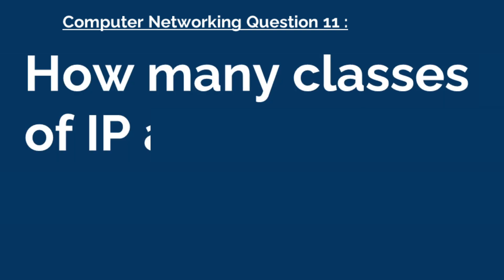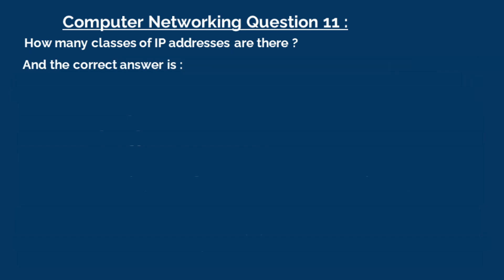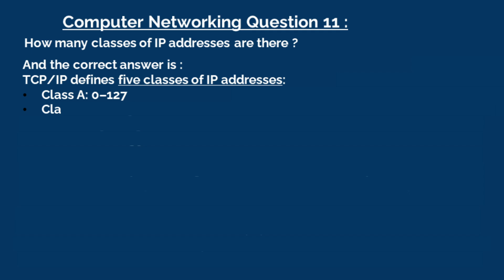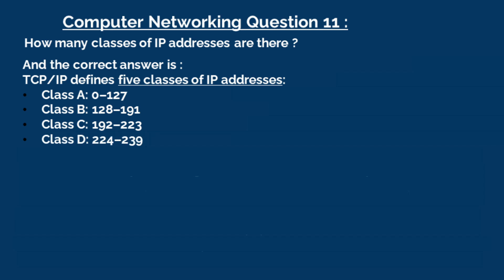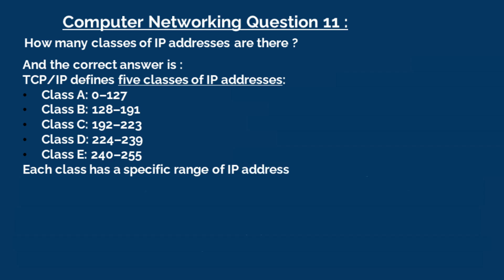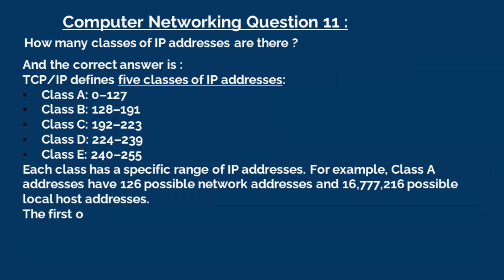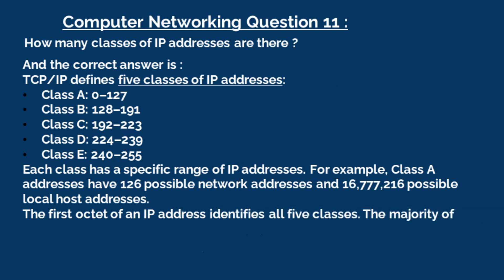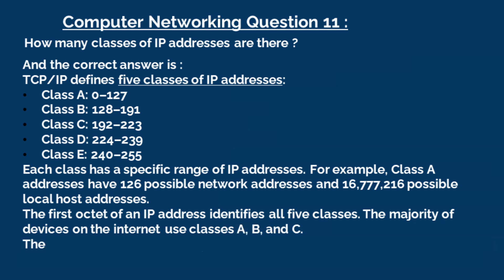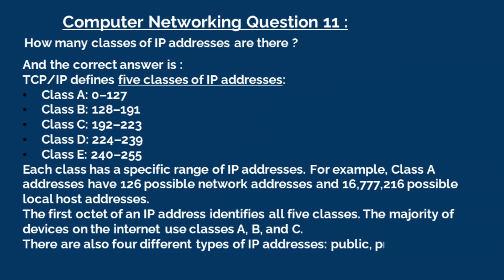Question 11: How many classes of IP addresses are there? The correct answer is, TCP/IP defines five classes of IP addresses: Class A (0 through 127), Class B (128 through 191), Class C (192 through 223), Class D (224 through 239), and Class E (240 through 255). Each class has a specific range of IP addresses. For example, Class A addresses have 126 possible network addresses and 16,777,216 possible local host addresses. The first octet of an IP address identifies all five classes. The majority of devices on the internet use classes A, B, and C. There are also four different types of IP addresses: Public, Private, Static, and Dynamic.